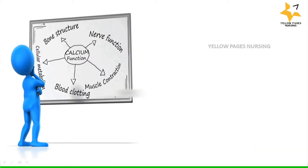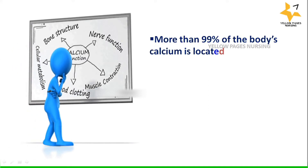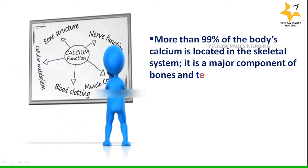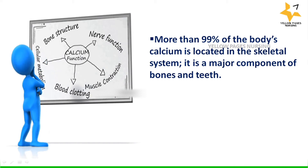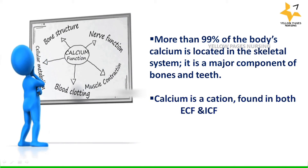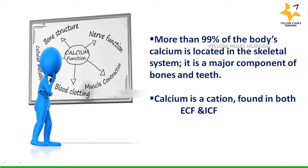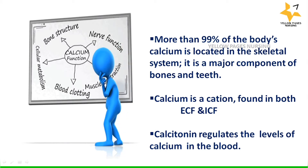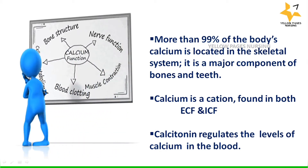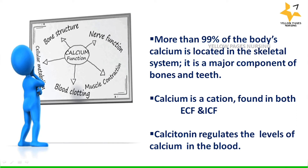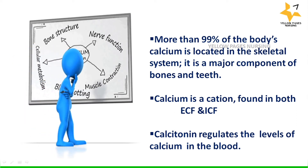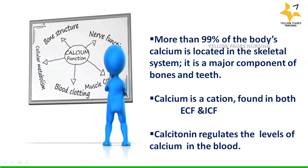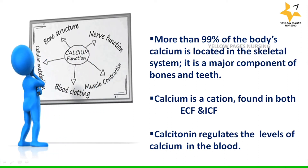More than 99% of the body's calcium is located in the skeletal system, hence it is a major component of bones and teeth. Calcium is a cation found in both extracellular fluid and intracellular fluid. Calcitonin regulates the level of calcium in the blood. Calcitonin is a hormone produced by the parafollicular cells, also known as C cells, of the thyroid gland. The functions of calcium include formation of bone structure, conduction of nerve impulses, muscle contraction.